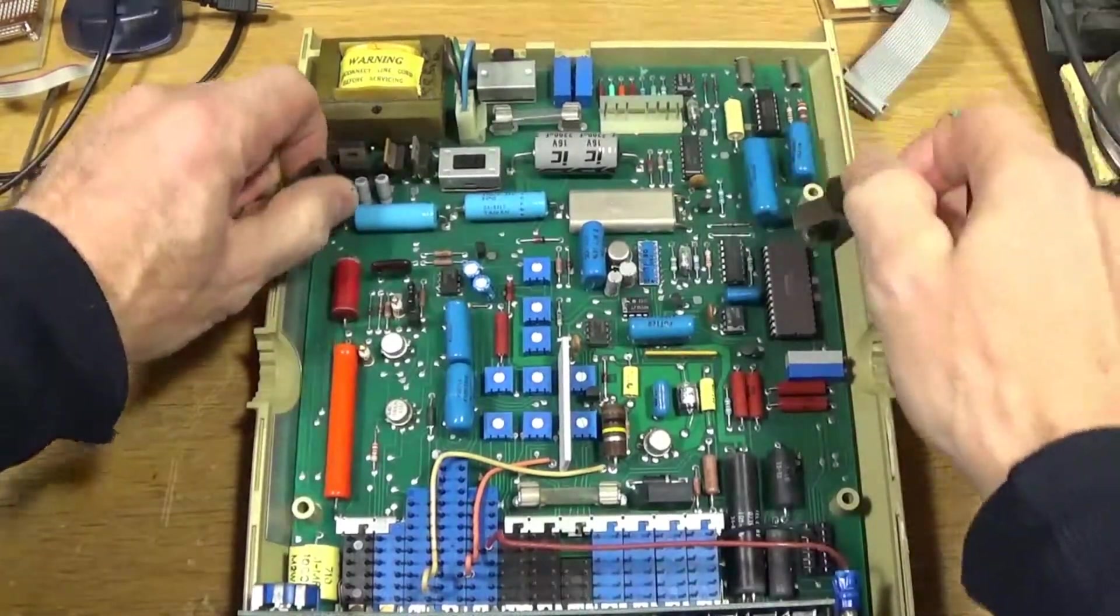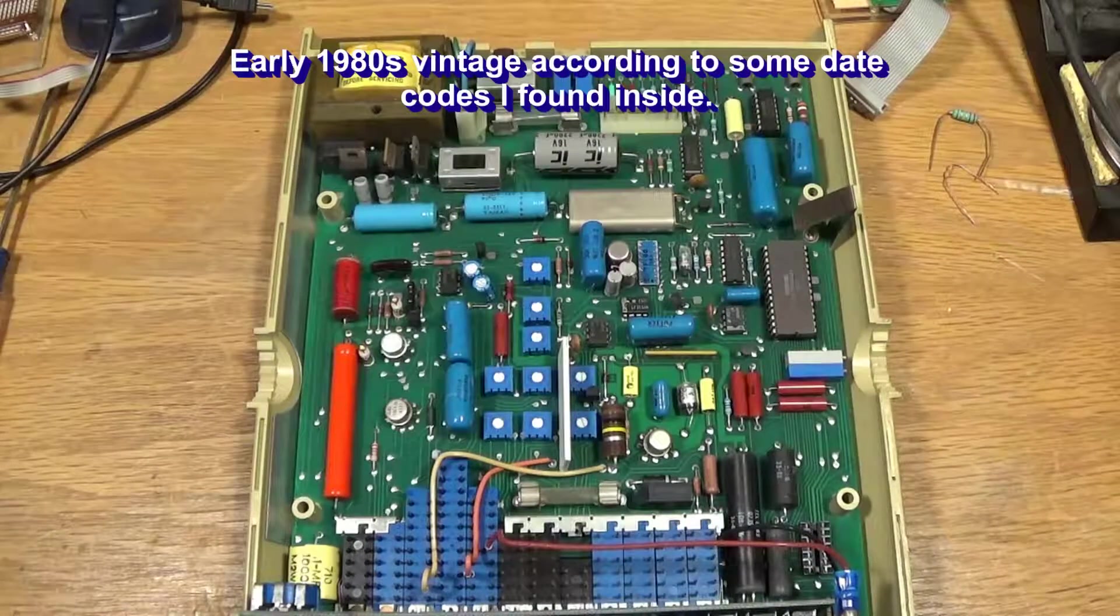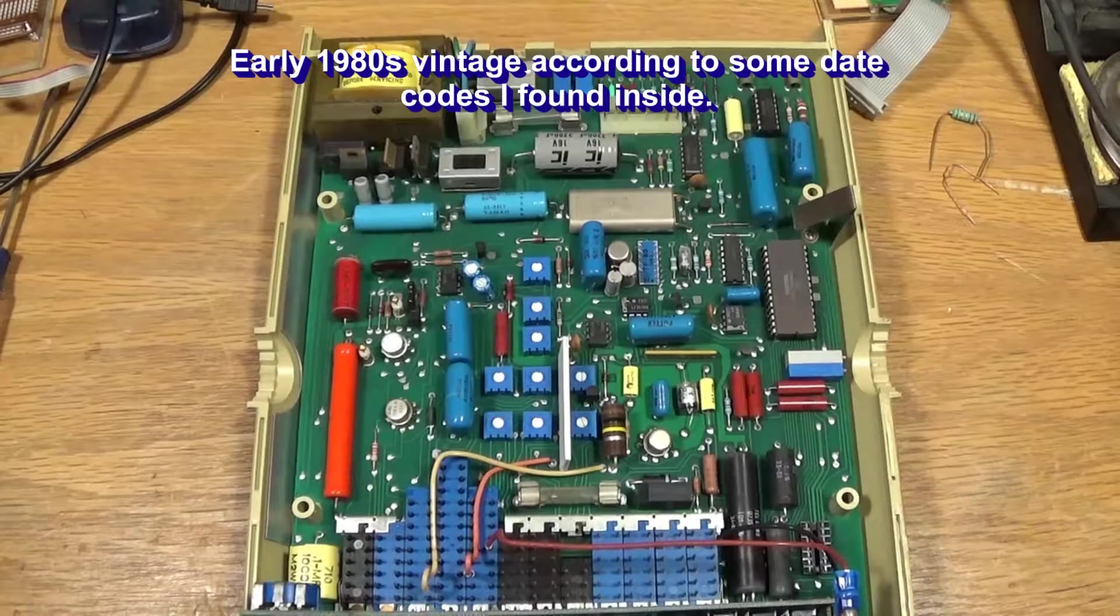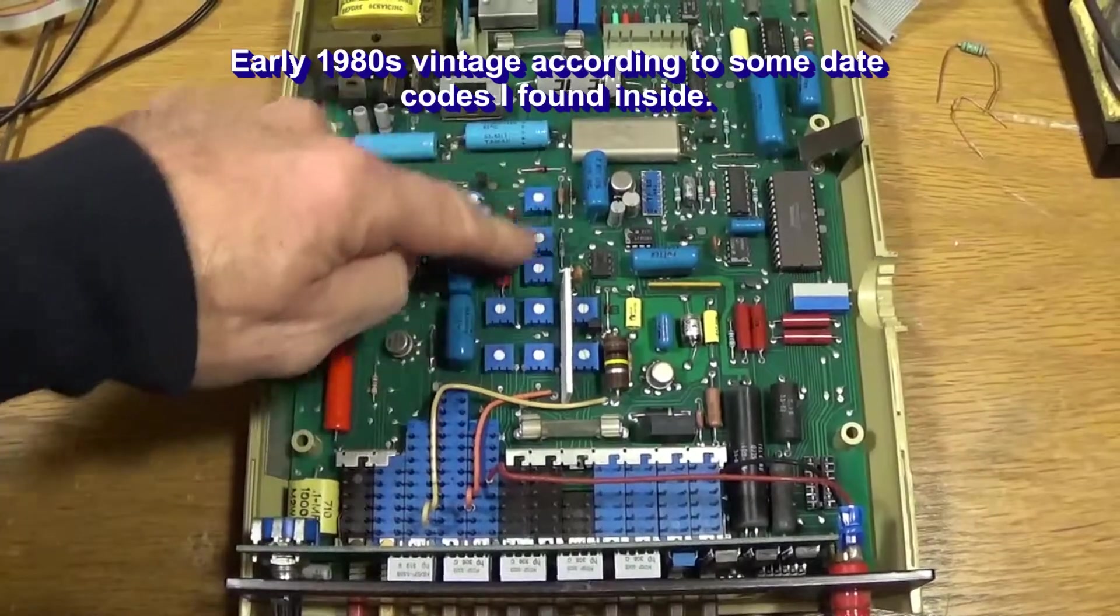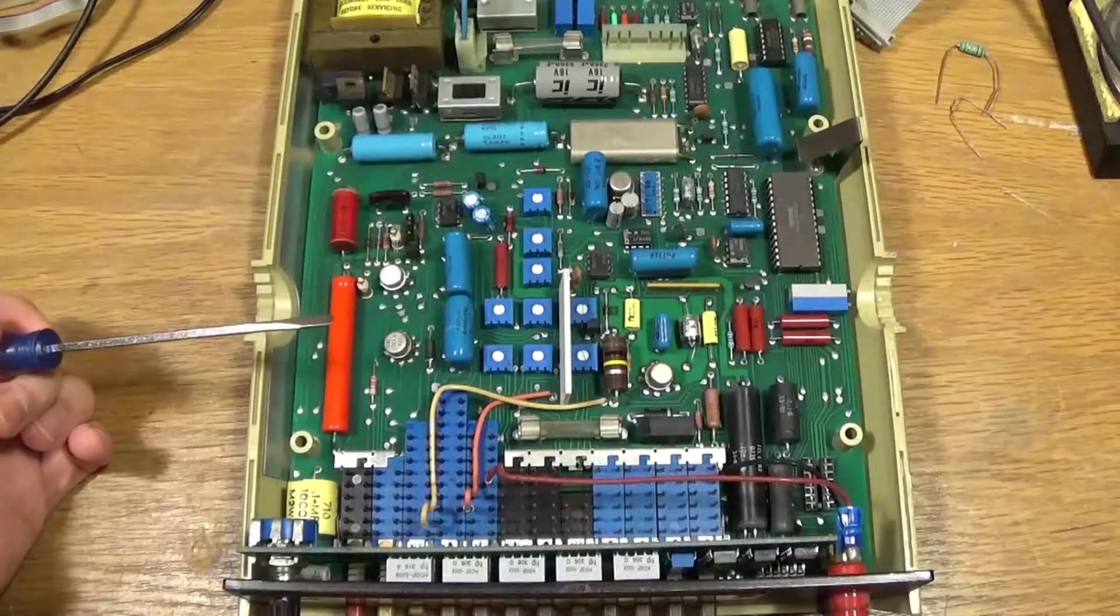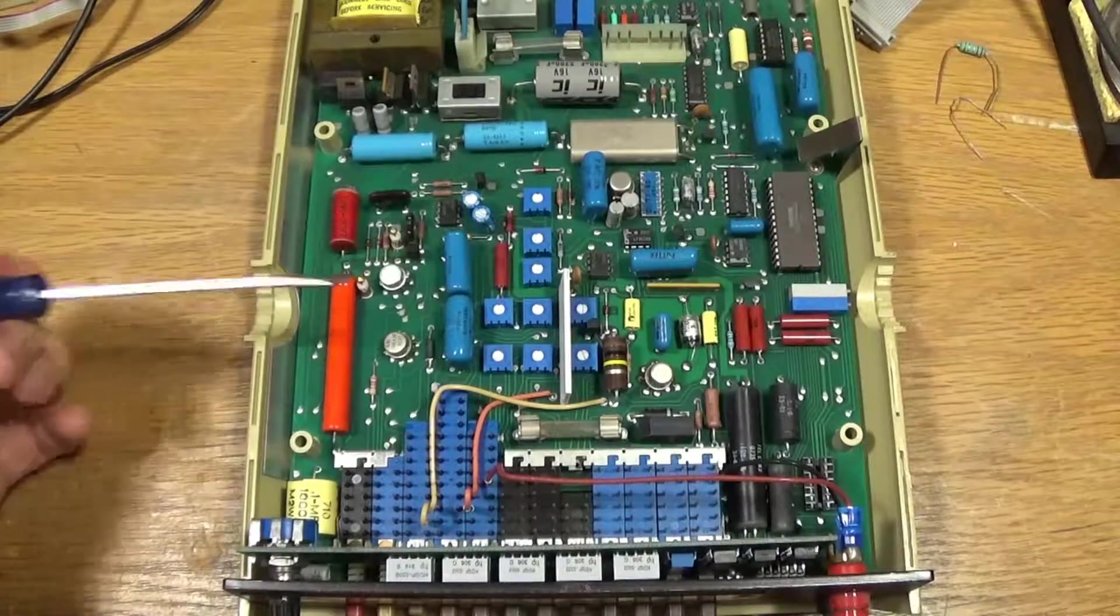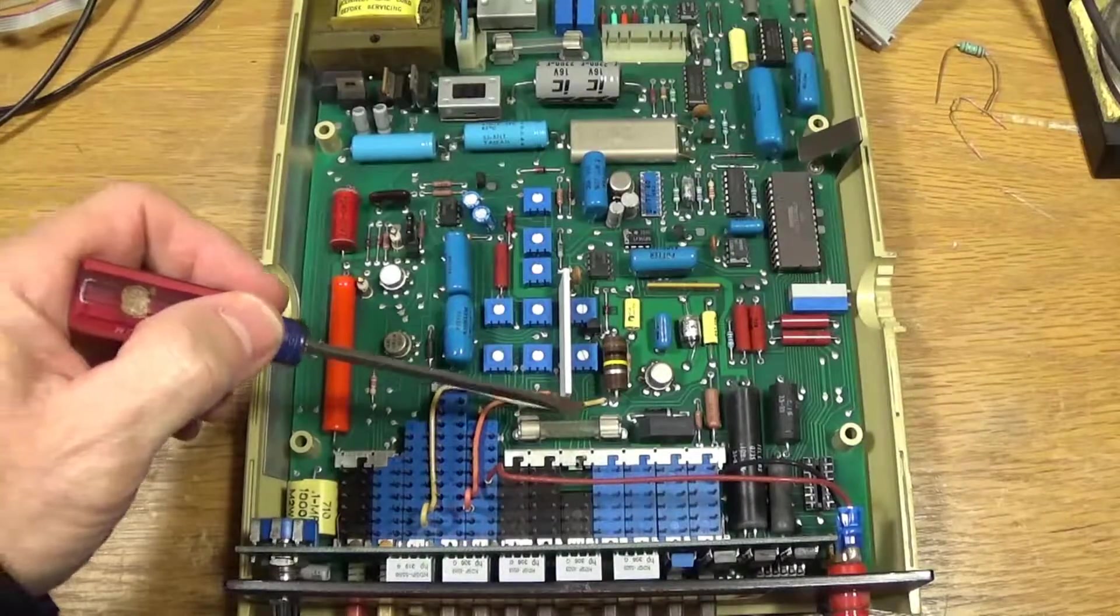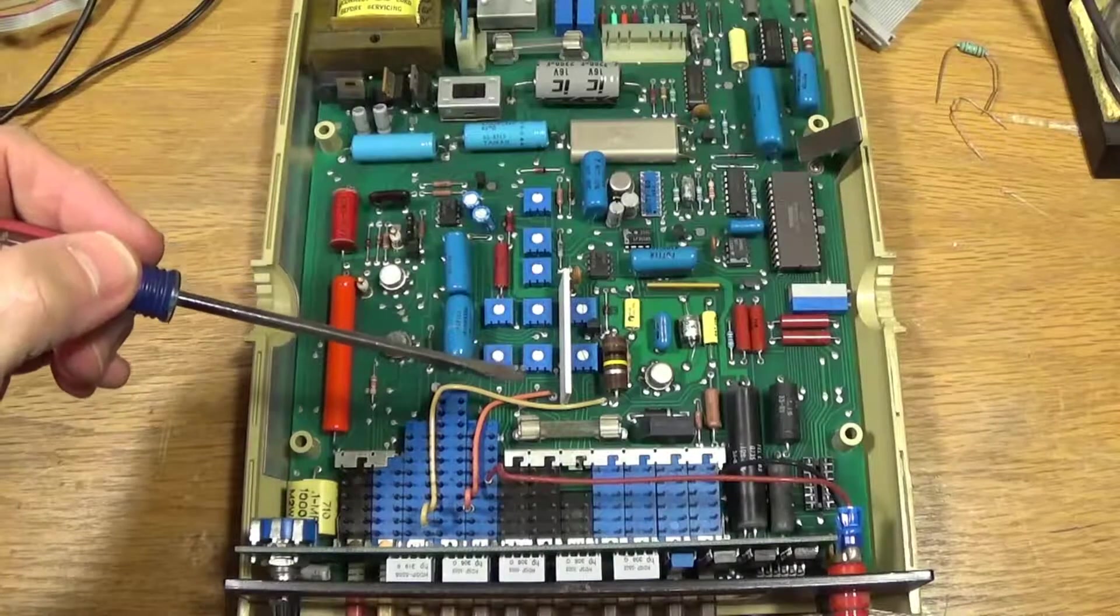This is pretty old school. It's all through-hole parts, no surface mount. All those blue potentiometers along here, those are for setting the calibration points. Not sure what all this stuff is for. Well, here's the fuse. I'm going to check to see if that's open. It looks kind of dirty inside there. I bet you that's blown. That would certainly affect the current reading.